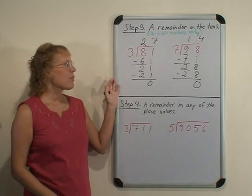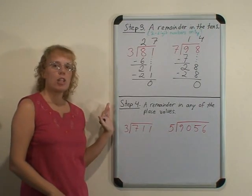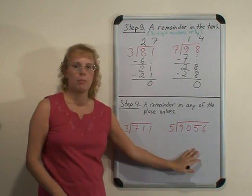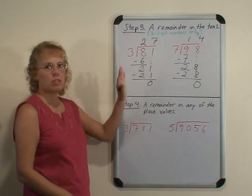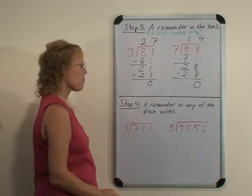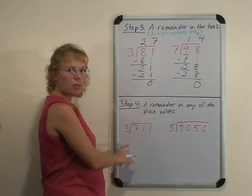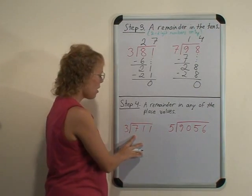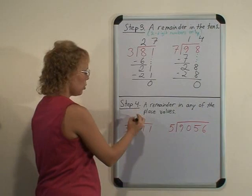After children master this step, then they are ready to divide longer numbers—3 or 4 digit numbers—where we will of course have to go through all these motions many more times. For example, 3 goes into 7 hundreds here 2 times.